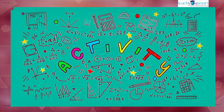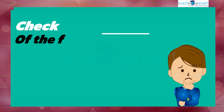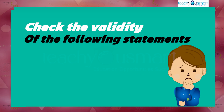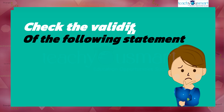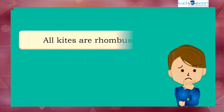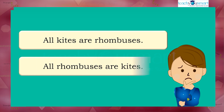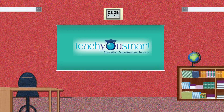Before winding up, let's check how much you understood by doing an activity. Check the validity of the following statements: one, all kites are rhombuses; two, all rhombuses are kites. That's all for now — see you all in the next class.